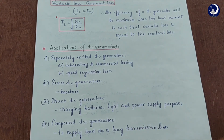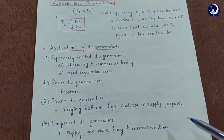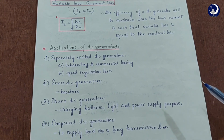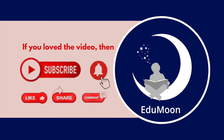With this we have finished our second chapter on DC generators. To score well in this subject, you need to solve problems also. Since you have learnt the theory and concept part by watching this lecture series, try solving at least one problem from each model — this method will really help you score marks easily. Thank you.